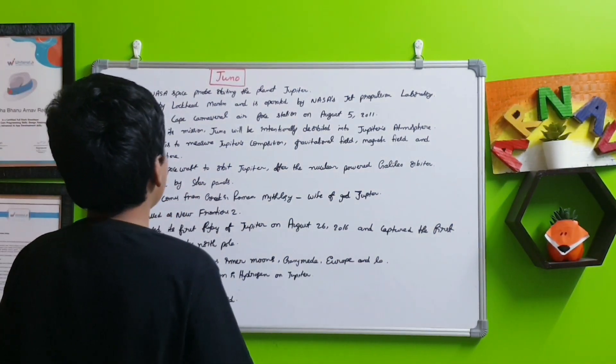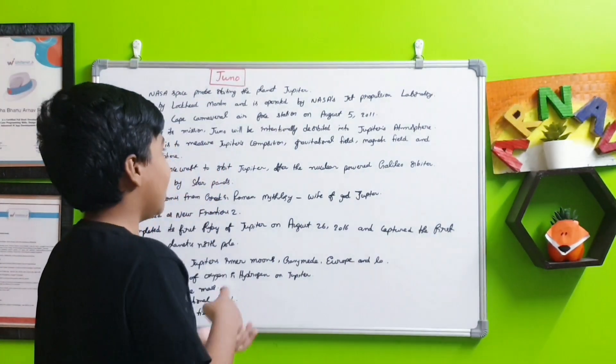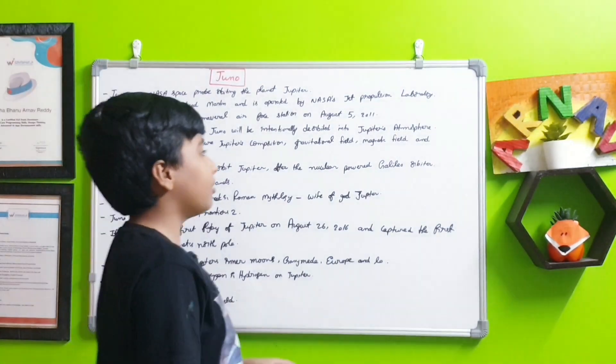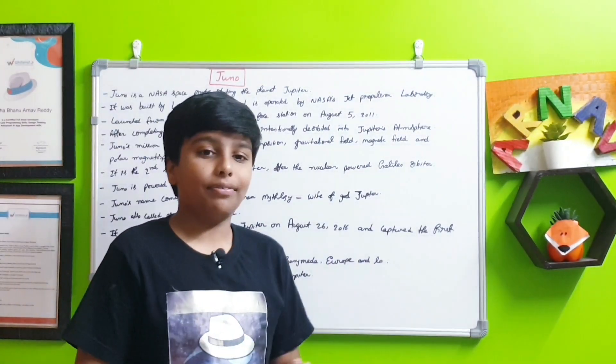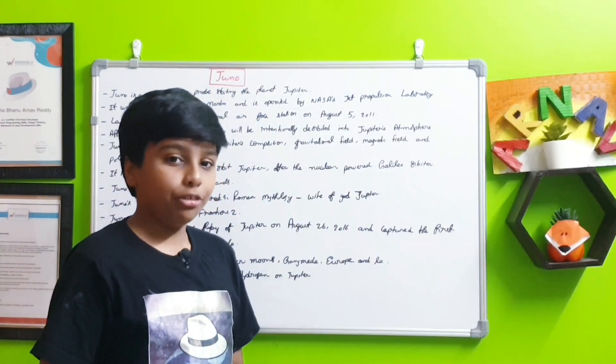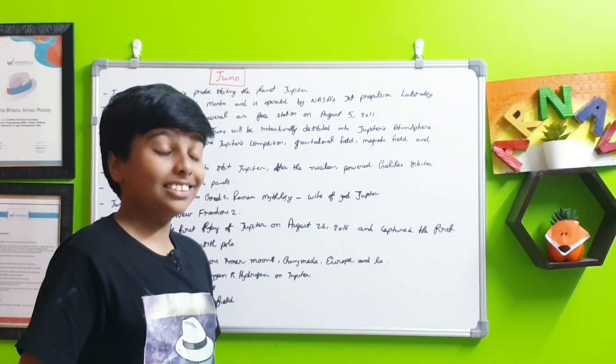Juno's mission is to measure Jupiter's composition like the amount of helium, what gases are inside the atmosphere, the gravitational field of Jupiter, the magnetic field of Jupiter, as well as the polar magnetosphere of Jupiter itself. So it has many jobs to do on this planet.